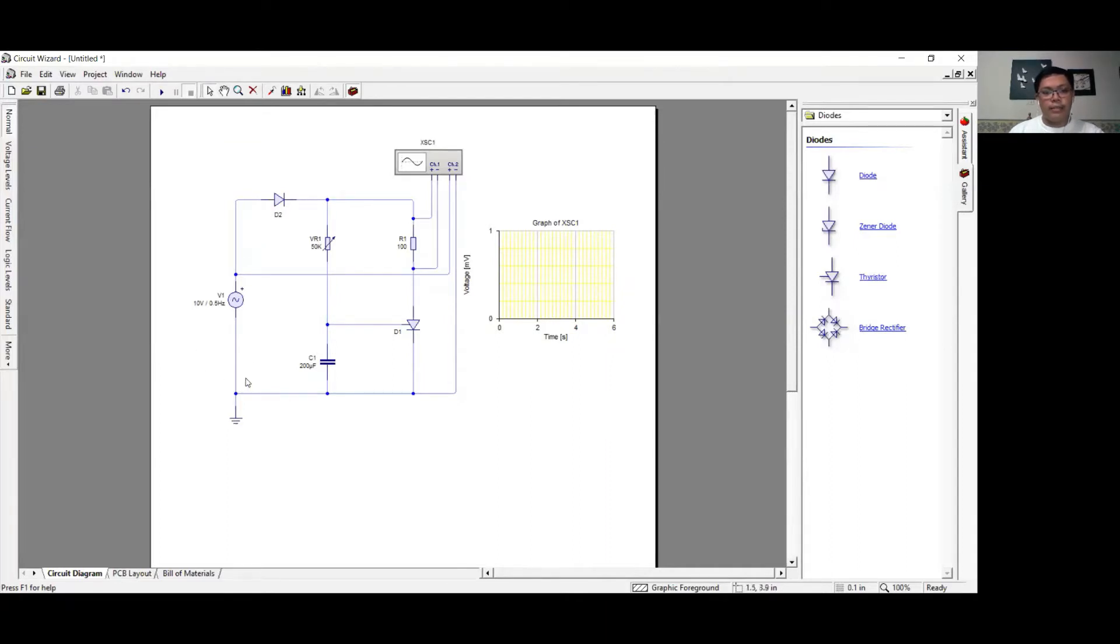Here is my SCR phase control circuit. We have our AC supply voltage, a diode, a variable resistor, a load resistance R1, D1 which is the SCR, and a capacitor.